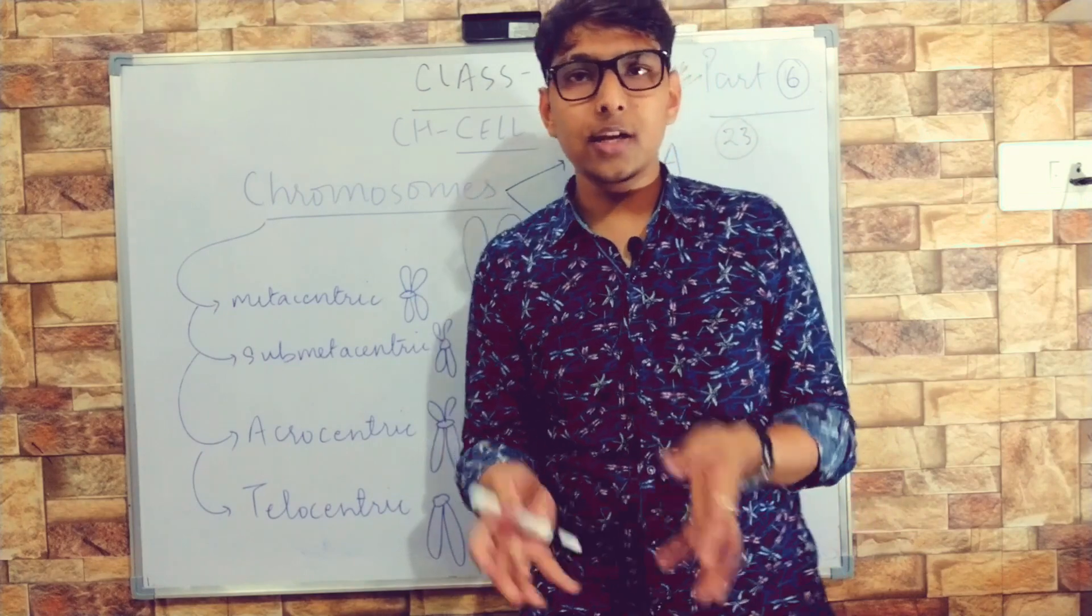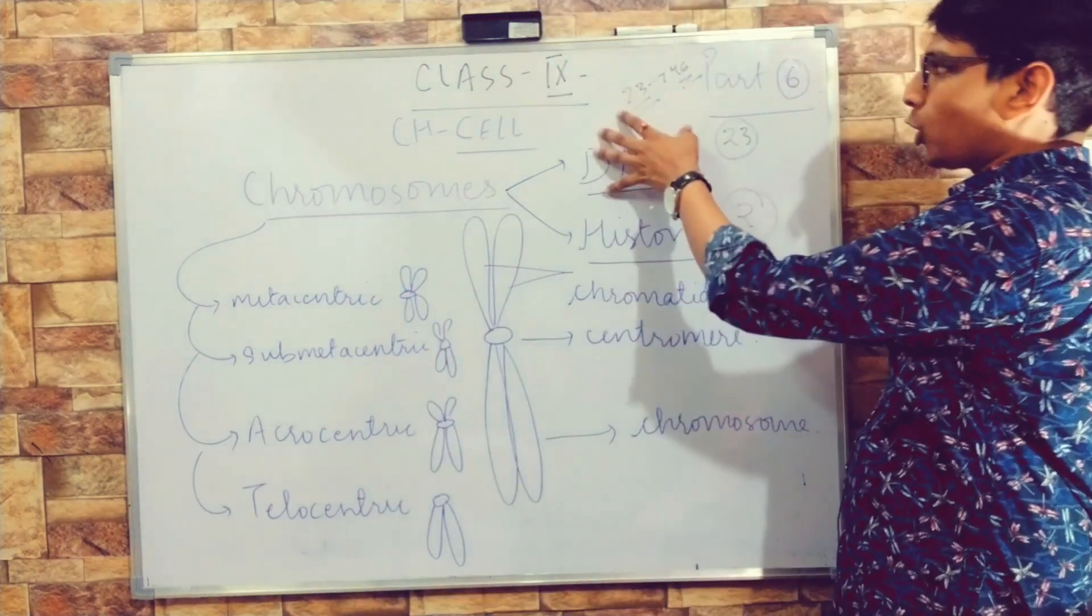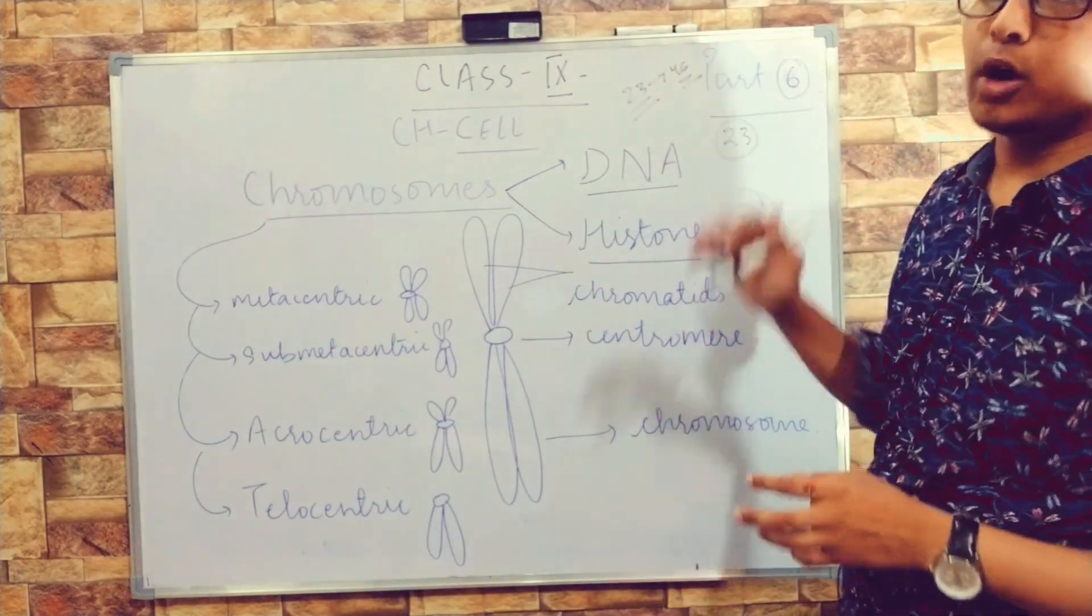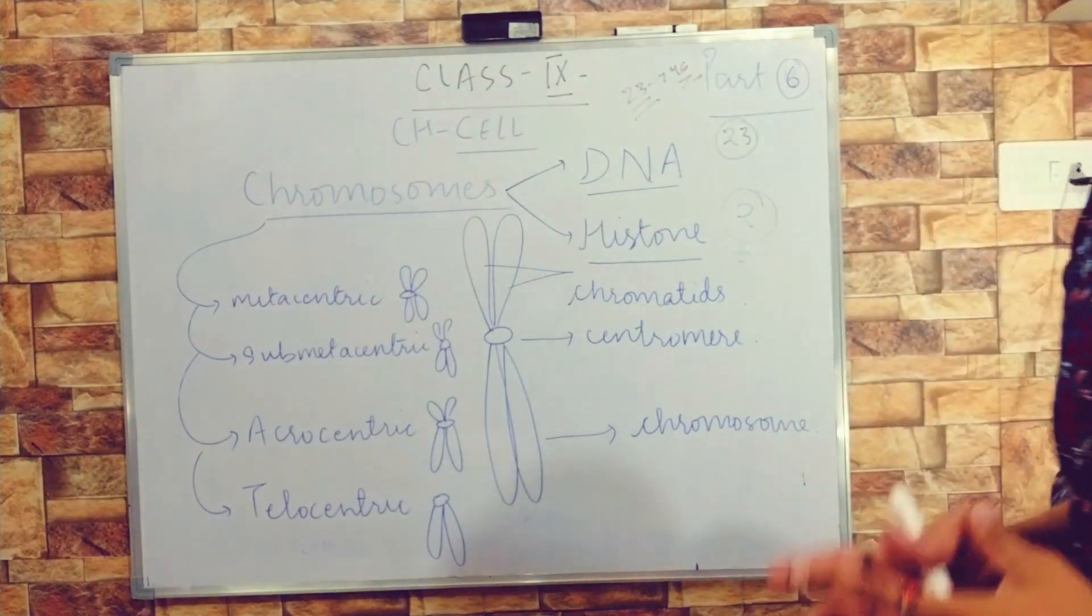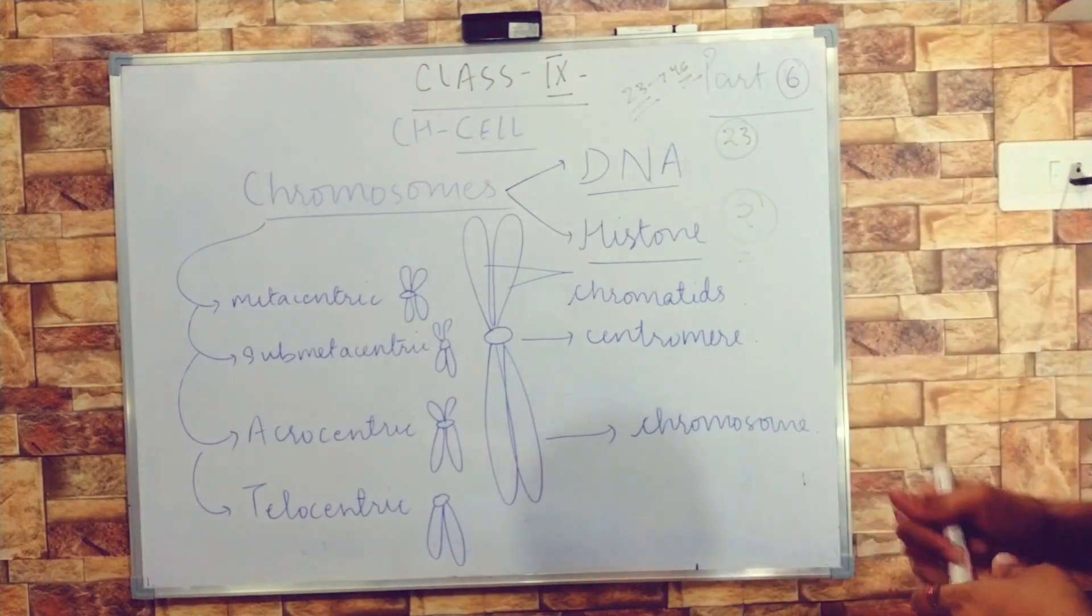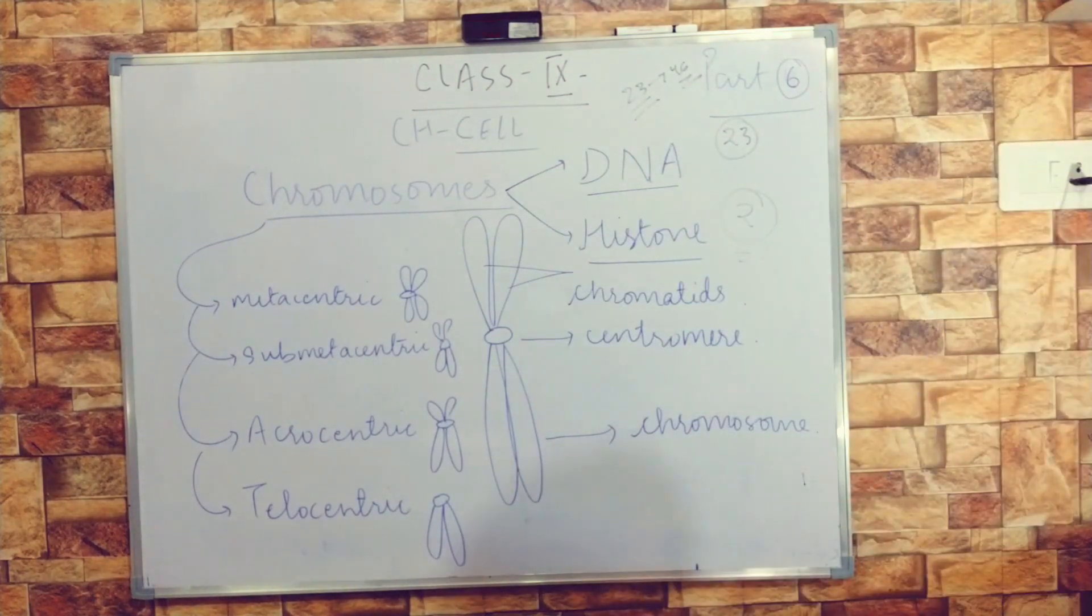So you can understand from the board—just listen to my voice. A set comprising unpaired chromosomes of each kind is said to be haploid.